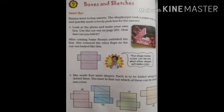You can see the picture of that box here. When we get a sweet box, we can see how easily we can make a box. After coming home, Ramya unfolded the box and removed the extra flaps. The cutout looks like this.